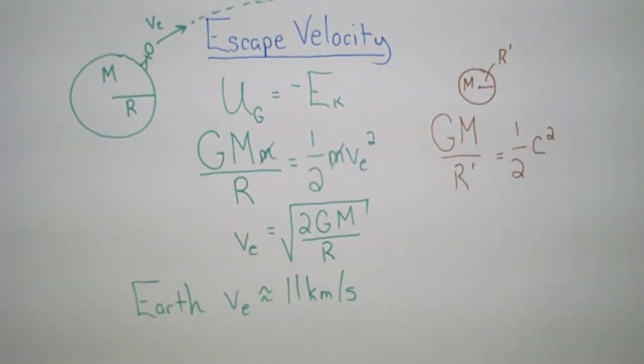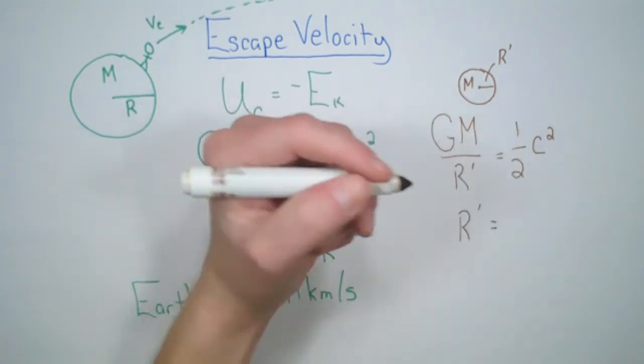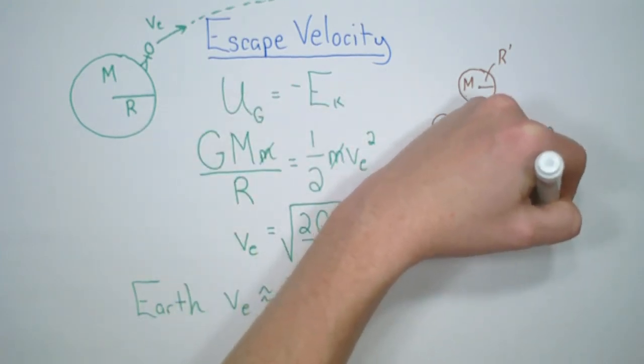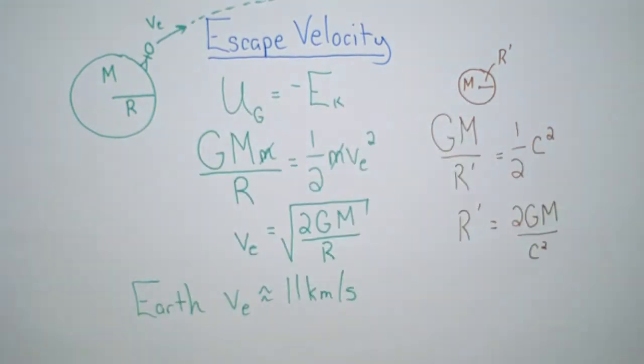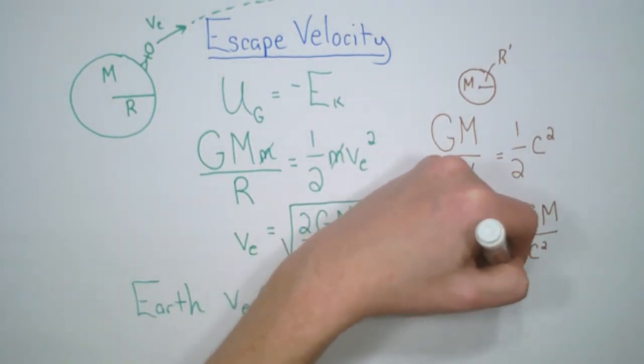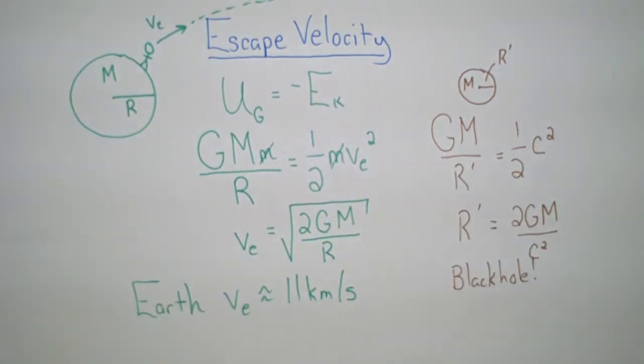If we rearrange, we get r prime, and we have an expression for r prime based on the mass of the object. Everything else is a constant. And this is what's known as the Schwarzschild radius, and this gives us the classical black hole.